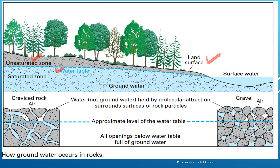Then is the saturated zone, the area below the water table where all the spaces between rocks and soil particles are filled with water. In the unsaturated zone, the pores are filled with both air and water. In the saturated zone, the pores are filled with water only. Groundwater is the water that fills the spaces in the saturated zone.